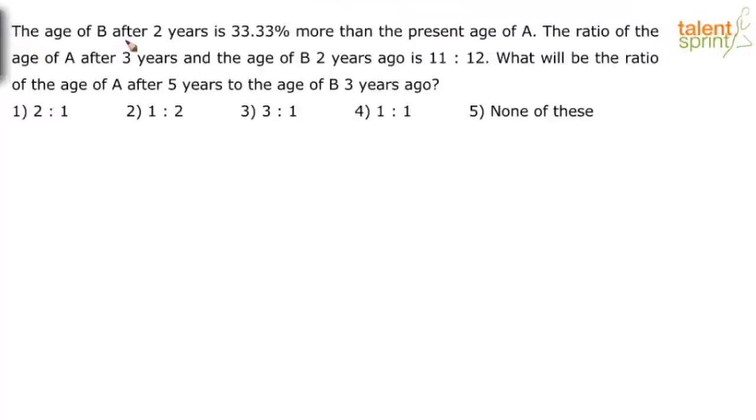The question says the age of B after 2 years is 33.33% more than the present age of A. The ratio of the age of A after 3 years and the age of B 2 years ago is 11 is to 12. What will be the ratio of the age of A after 5 years to the age of B 3 years ago?